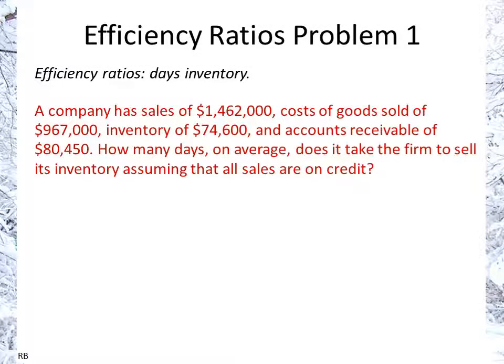Welcome to efficiency ratios, problem one. We're going to be doing days inventory. A company has sales of 1.462 million, cost of goods sold of 967,000, inventory of 74,600, and accounts receivable of 80,450. The question is: how many days on average does it take the firm to sell its inventory, assuming that all sales are on credit?